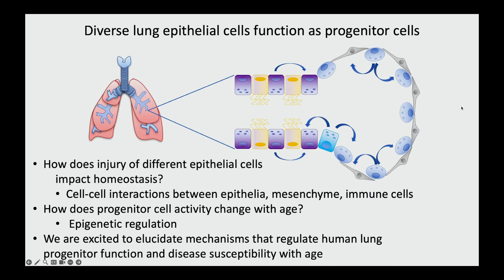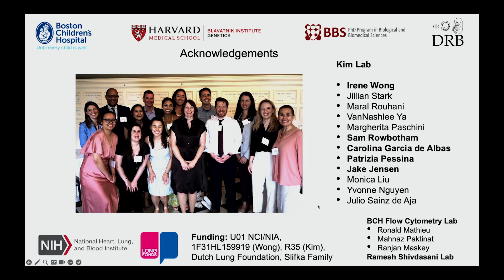In closing, hopefully I've shown you how we're addressing some of the important questions in pulmonary cell biology. I've shown you that important cell-cell interactions between epithelial cells, mesenchyme, and immune cells are regulating the usage of different progenitor cell types. And I've shown you how epigenetic regulation is key in controlling progenitor cell activity with age. I want to thank the people who have done this work throughout the years, and I'm very thrilled to have this wonderful team. Thank you, and I'll be happy to take your questions.